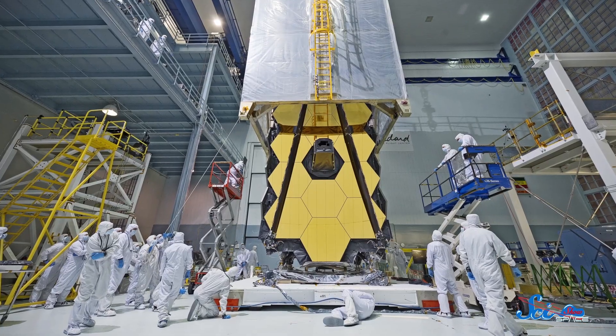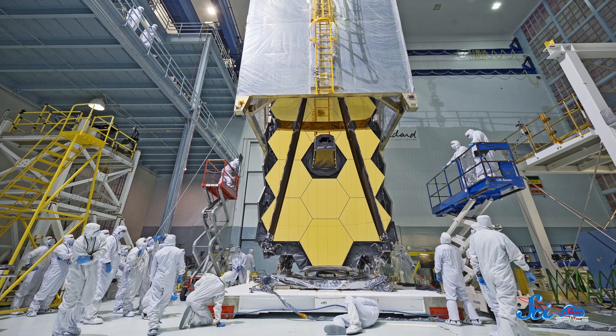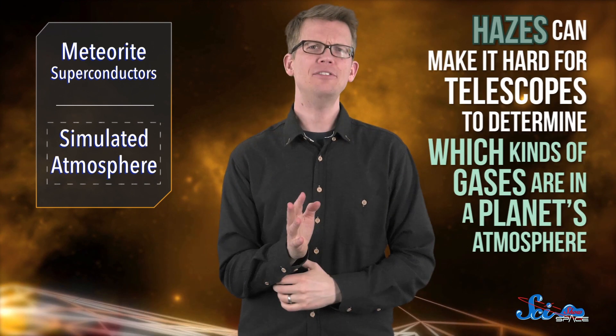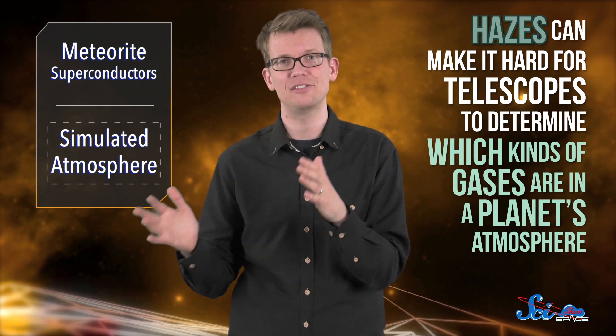Knowing all of this will be important when NASA launches the James Webb Space Telescope, which should happen next year. I can't believe it's finally happening. Webb will study tons of faraway exoplanets and should give us great observations. But hazes can sometimes make it hard for telescopes to determine which kinds of gases are in a planet's atmosphere. So if we know right from the start what mixes tend to produce haze, we'll be able to better interpret and fill any holes in the data Webb provides. These experiments are kind of like doing prep work before you walk into your lab class.